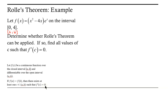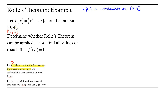There are essentially three criteria that must be met in order to apply Rolle's theorem. First, our function must be continuous over the closed interval from a to b. Looking at our function, we have a product of a polynomial with an exponential function. Polynomials are continuous everywhere, and so is the exponential function, so their product is continuous over all real numbers — certainly over the interval from 0 to 4.